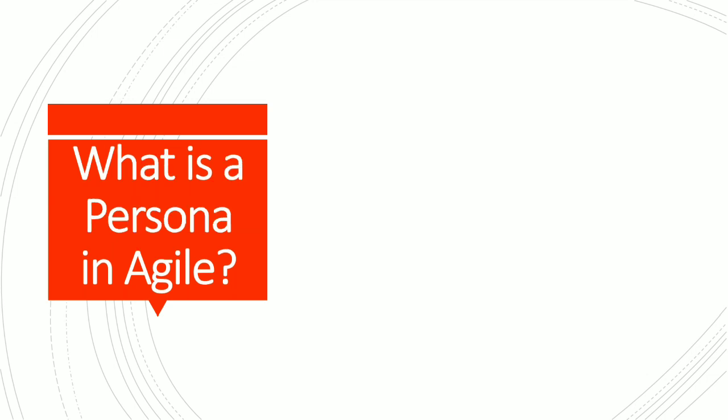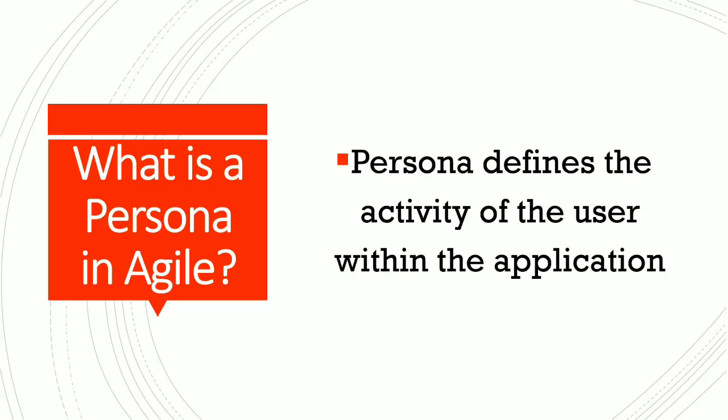Now let us see what is a persona in agile. Persona defines the characteristic trait of the user — meaning, in what way the user would consume the web app or the mobile app. That defines the persona of the user.